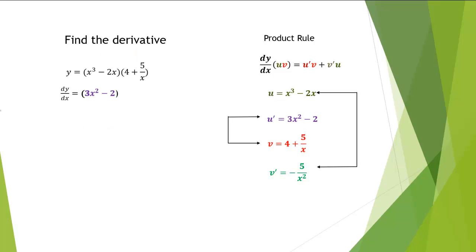Now we'll use the product rule. We'll multiply u prime times v plus v prime times u. So we have the derivative as u prime, which is 3x squared minus 2, times v, which is 4 plus 5 over x, plus v prime, which is negative 5 over x squared, times u, which is x cubed minus 2x.